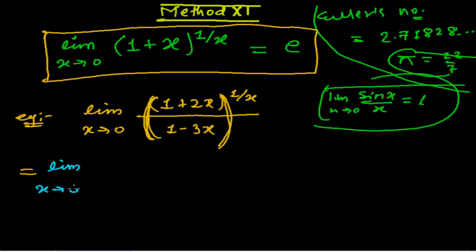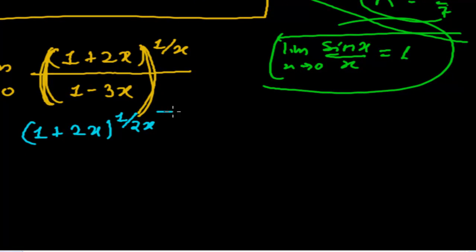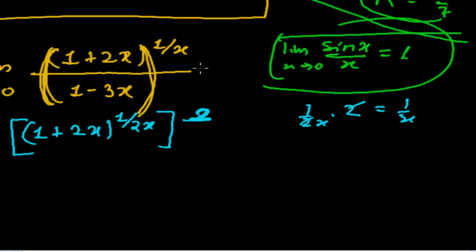So, limit when x tends to 0. For the numerator, I am writing (1 + 2x) whole to the power 1/(2x). Because the original exponent is 1/x, but I introduced 1/(2x), so I need to square it — since (1/(2x)) × 2 gives back 1/x.